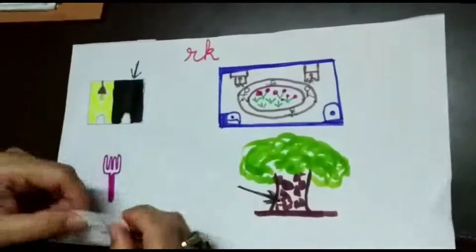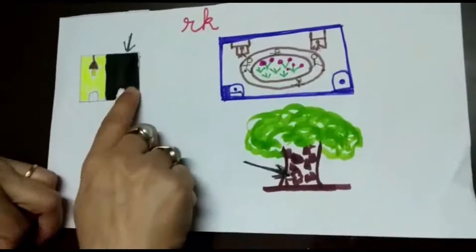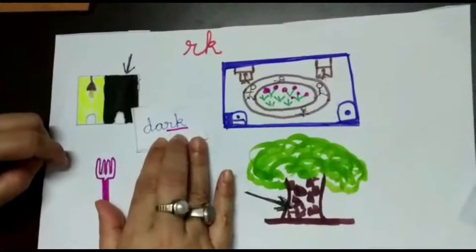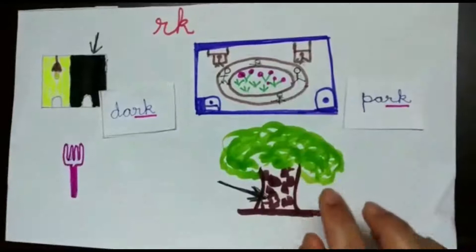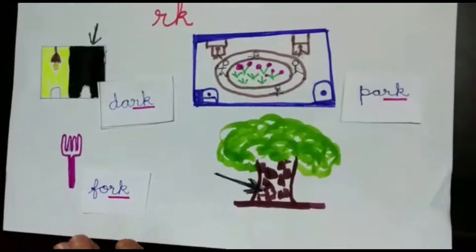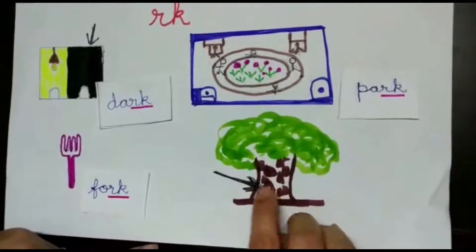Next one, we see rk, rk. This room has light and this room does not have light. The arrow here is saying dark, dark. At night it becomes dark, dark. And children play in the park, park, park, rk. And you eat your food with a fork, fork, fork. And this is the surface of the bark.